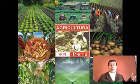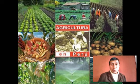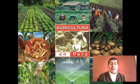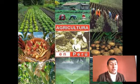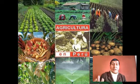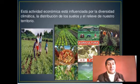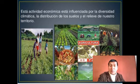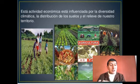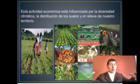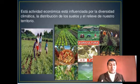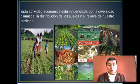Vayamos a conocer qué tenemos de riqueza. En agricultura, el Perú es una de las tierras más ricas de todo el continente, porque es diverso. Como tenemos diversos pisos ecológicos —Yunga, Quechua principalmente— tenemos una agricultura floreciente. Esta actividad económica está influenciada por la diversidad climática, la distribución de suelos y el relieve de nuestro territorio. Zonas como Paucartambo son de agricultura excelente, puedes encontrar diversos productos. Los pisos ecológicos influyen muchísimo para tener una buena agricultura en el país.